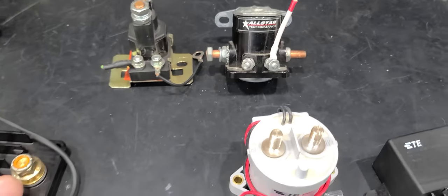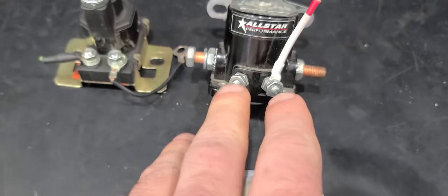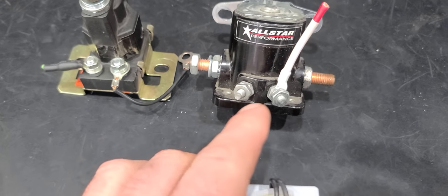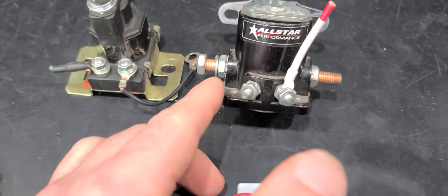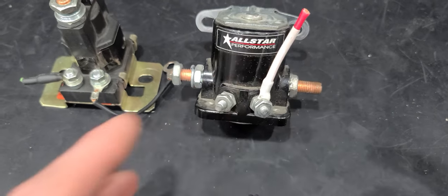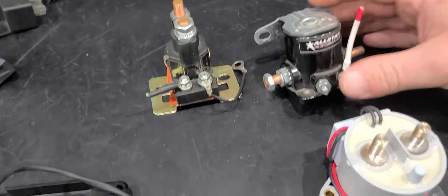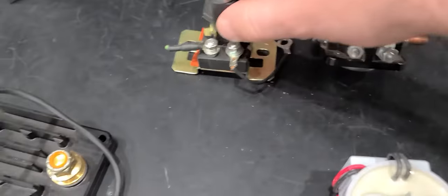Next we've got some higher amperage capacity stuff. These are in essence called contactors. Same functionality though - ground, power, and now you've got this lug connected to this lug.